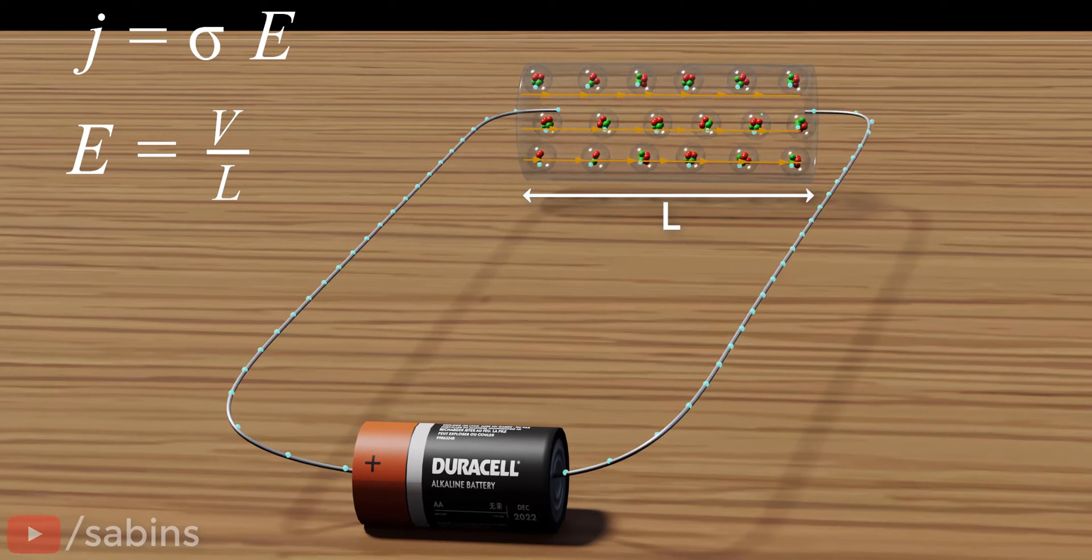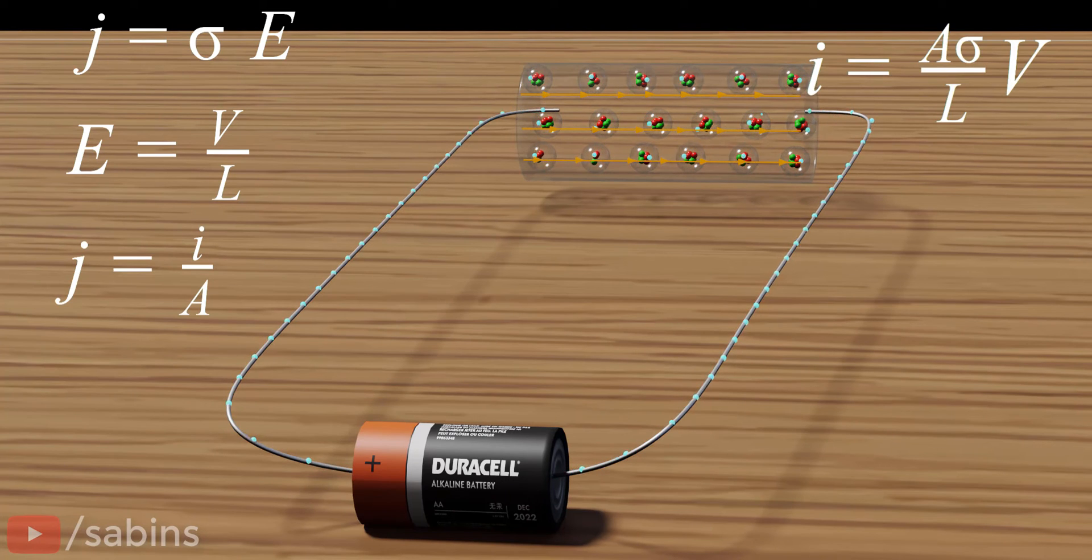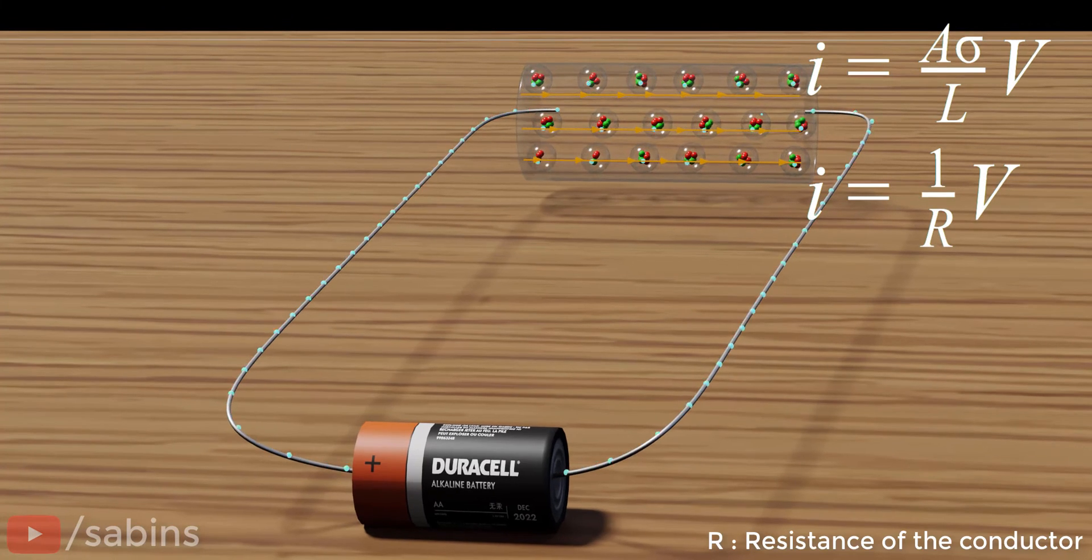If the conductor has a cross-sectional area of A, we can convert this to a relationship between voltage and current. This representation of Ohm's law is the most used one in physics and engineering.